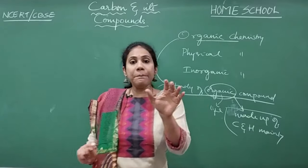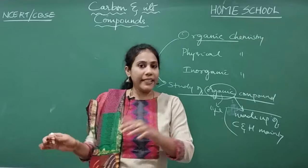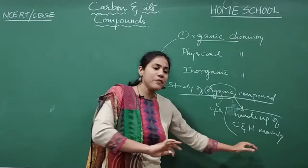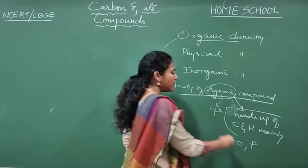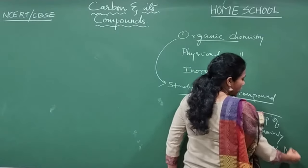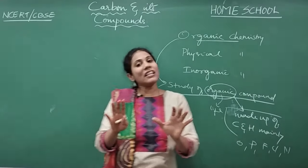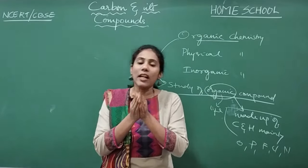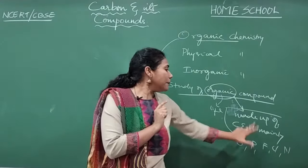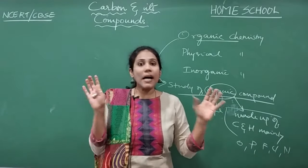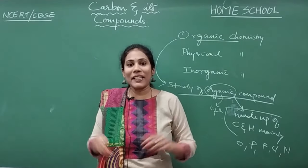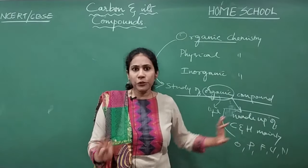Carbon and hydrogen are compulsorily present in a compound for it to be called organic. Along with these elements, other elements can also be present — sometimes oxygen, sometimes phosphorus, sometimes halogens like fluorine, chlorine, bromine, sometimes sulfur, and sometimes nitrogen. But carbon and hydrogen must be present. Carbon is the main element — the superhero of all organic compounds. Without carbon, there is no organic compound in nature.